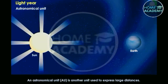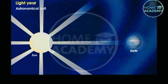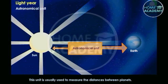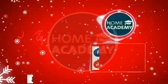An astronomical unit, AU, is another unit used to express large distances. An astronomical unit is the average distance of the sun from the earth. This unit is usually used to measure the distances between planets. One astronomical unit equals 149,597,870 kilometers.